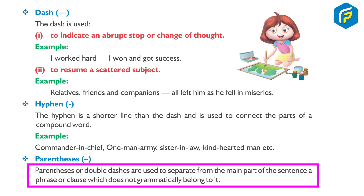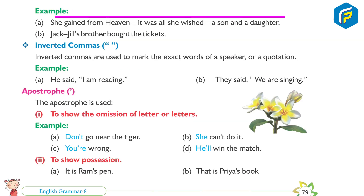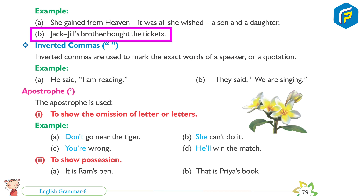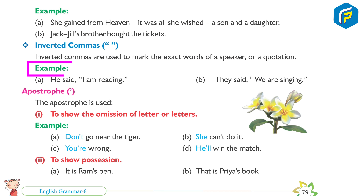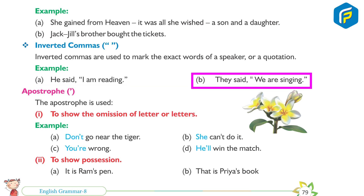Parenthesis: Parentheses or double dashes are used to separate from the main part of the sentence a phrase or clause which does not grammatically belong to it. Example: She gained from heaven — it was all she wished — a son and a daughter. Jack (Jill's brother) bought the tickets. Inverted commas: Inverted commas are used to mark the exact words of a speaker or a quotation. Example: He said, 'I am reading.' They said, 'We are singing.'